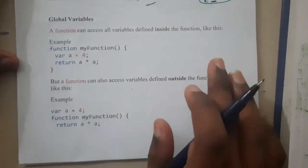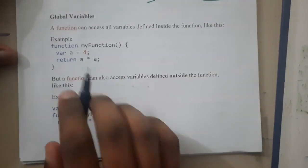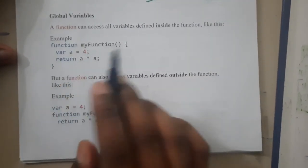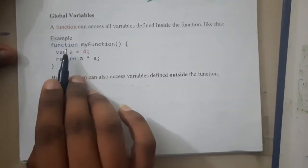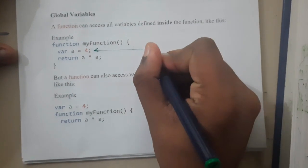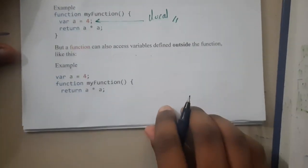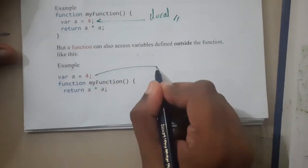Let me give you a small introduction about local and global variables in JavaScript. Let us take this as an example. If you notice here, the variable is defined inside the function, so you can say that this is a local variable. If you observe here, this variable is outside the function—this could be a global variable.